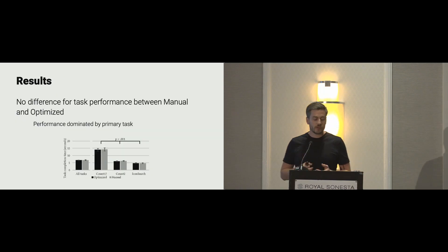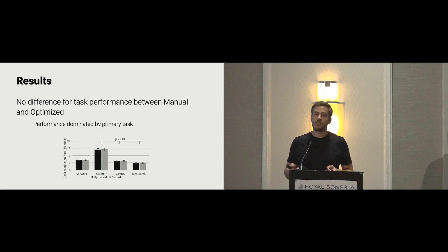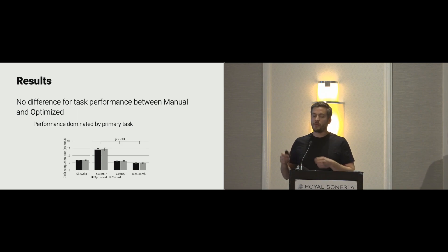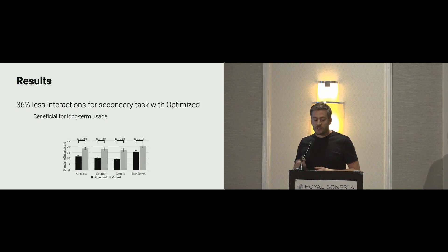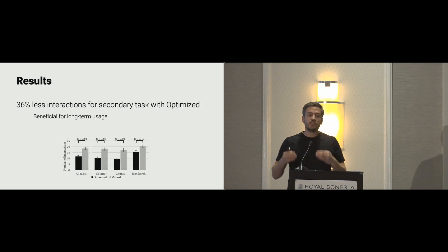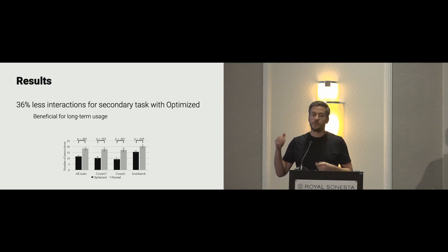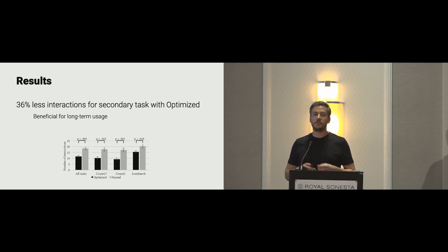In terms of results, we found no significant difference in task performance between manual and optimized conditions. This is not unexpected — performance is dominated by the primary task — but our system did not disturb users in fulfilling the task, which is already the first goal for an adaptive system. What we also found is that our method decreased the number of necessary interactions by 36% compared to manual, which suggests this is beneficial in the long term and makes context adaptation applicable.